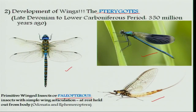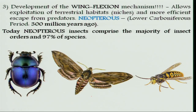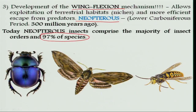The second great radiation of insects took place with a very slight modification — a wing-flexing mechanism, meaning they developed the ability to fold their wings. With this modification, insects could exploit smaller places, escape from predators, and achieve better survivorship. These insects are referred to as the Neoptera group. Nearly 97 percent of the species existing today belong to the Neoptera group.